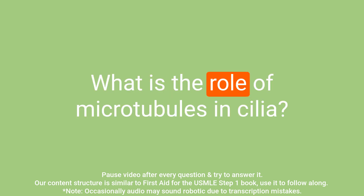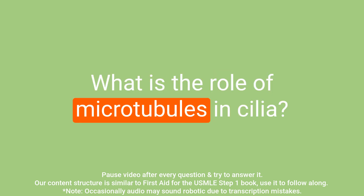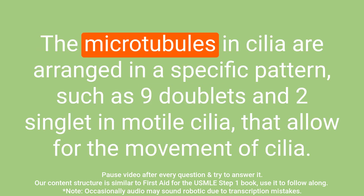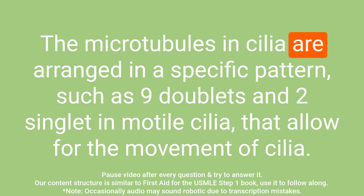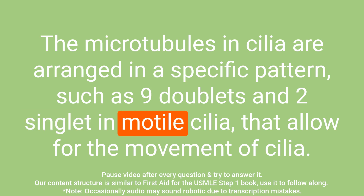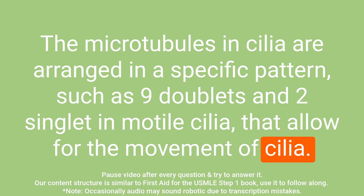Question: What is the role of microtubules in cilia? Answer: The microtubules in cilia are arranged in a specific pattern — such as nine doublets and two singlets in modal cilia — that allows for the movement of cilia.